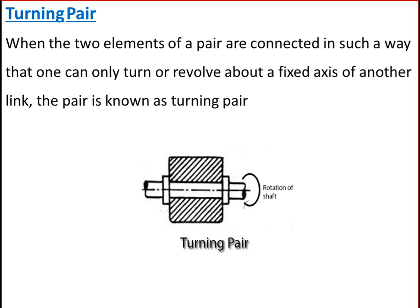Next is a turning pair. When two elements of a pair are connected such that one can only turn or revolve about a fixed axis of another link, the pair is known as a turning pair. A shaft with collars at both ends fitted into a circular hole, the crankshaft in a journal bearing in an engine, lathe spindle supported in headstock, and cycle wheels turning over their axles are examples of a turning pair. A turning pair also has completely constrained motion.